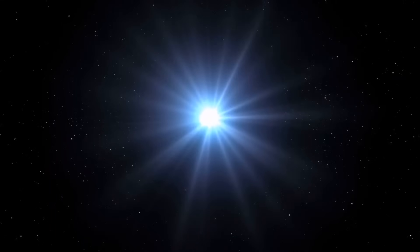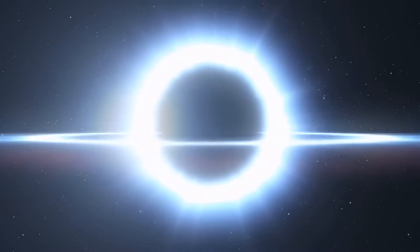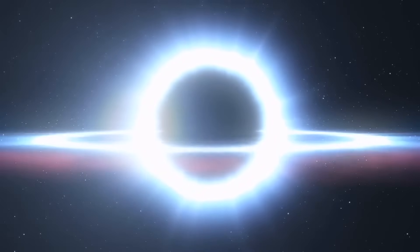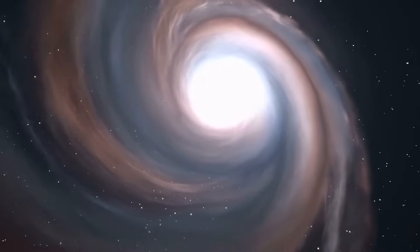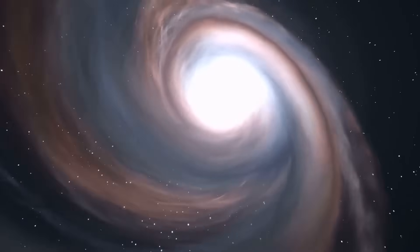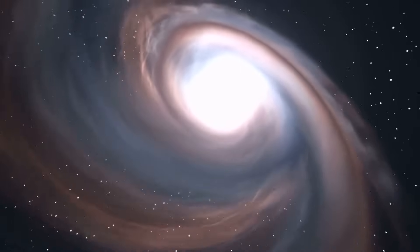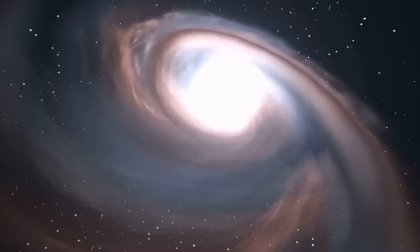For example, the cyclic universe theory suggests that the universe goes through continuous cycles of creation and destruction, with each cycle ending in a big crunch and beginning with a Big Bang. This theory would imply that the universe does not have an absolute beginning or end, but is eternal and dynamic.